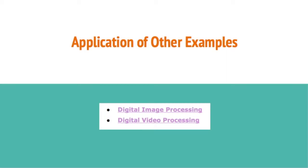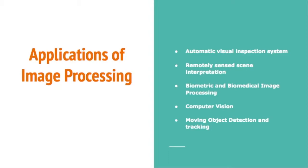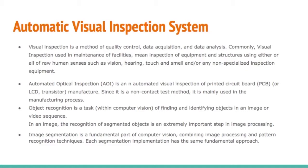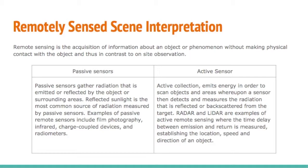For the application examples, they will be explained by Eveline Charisma. There are two categories: digital image processing applications and video processing applications. The image processing applications include automatic visual inspection systems, remotely sensed image interpretation, biometric and biomedical image processing, computer vision, and moving object detection and tracking. The automatic visual inspection system is a method of quality control, data acquisition, and data analysis, commonly used in maintenance of facilities — inspecting equipment and structures using human senses such as vision, hearing, touch, and smell, or other inspection methods.